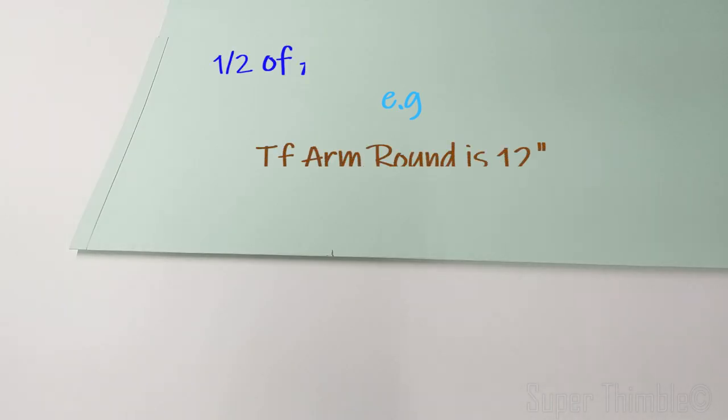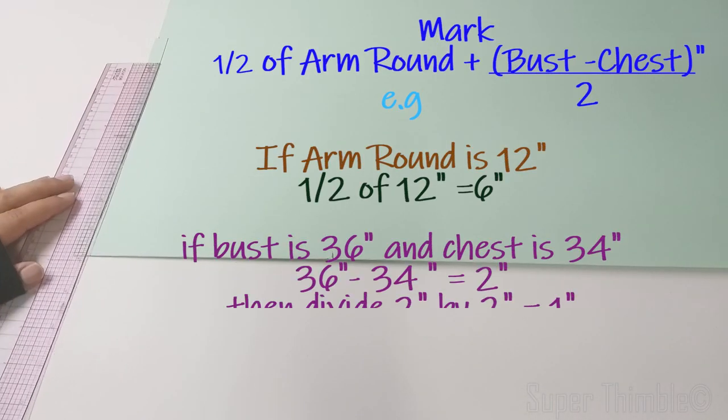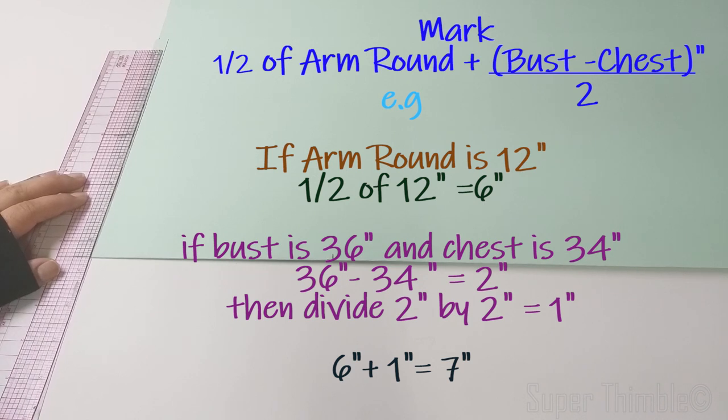On the line, measure half of arm round plus bust minus chest divided by 2. Let's assume arm round is 12 inch. Half of arm round is 6 inch, and the difference between bust and chest is 2 inch. Divided by 2 gives us 1, so 6 plus 1 is 7 inch.